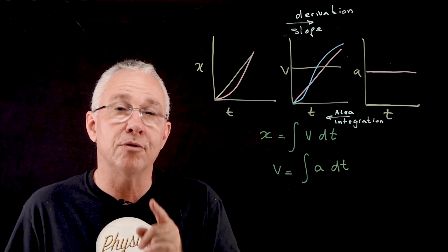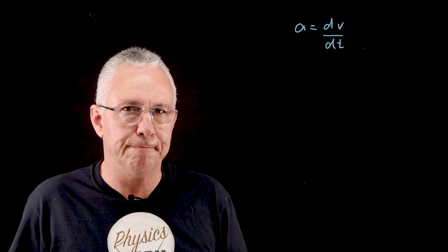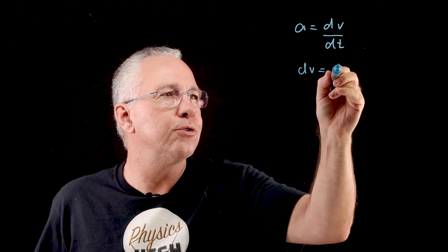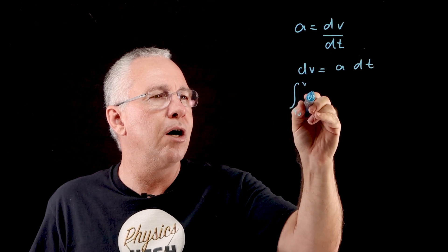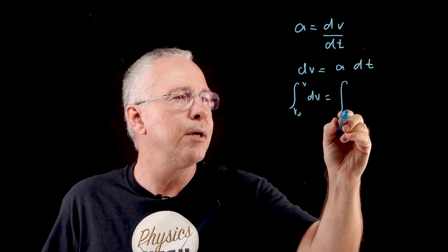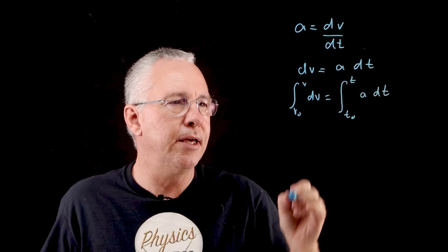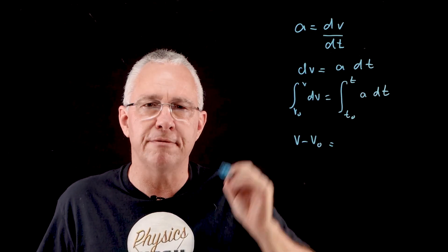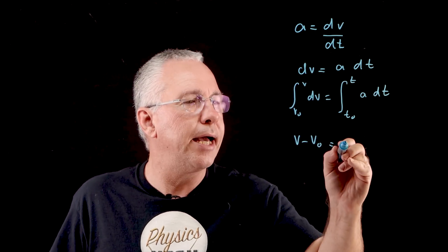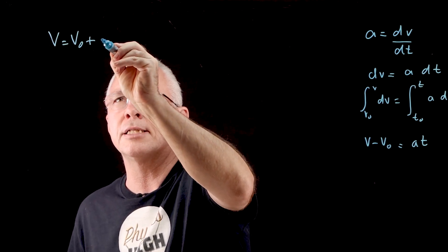Now we are in a position to derive the equations of motion using calculus. We start with a = dv/dt, which rearranges to dv = a dt. Integrating both sides, the integral from v₀ to v of dv equals the integral from 0 to t of a dt. This gives v − v₀ = at, and therefore our first equation of motion is v = v₀ + at.